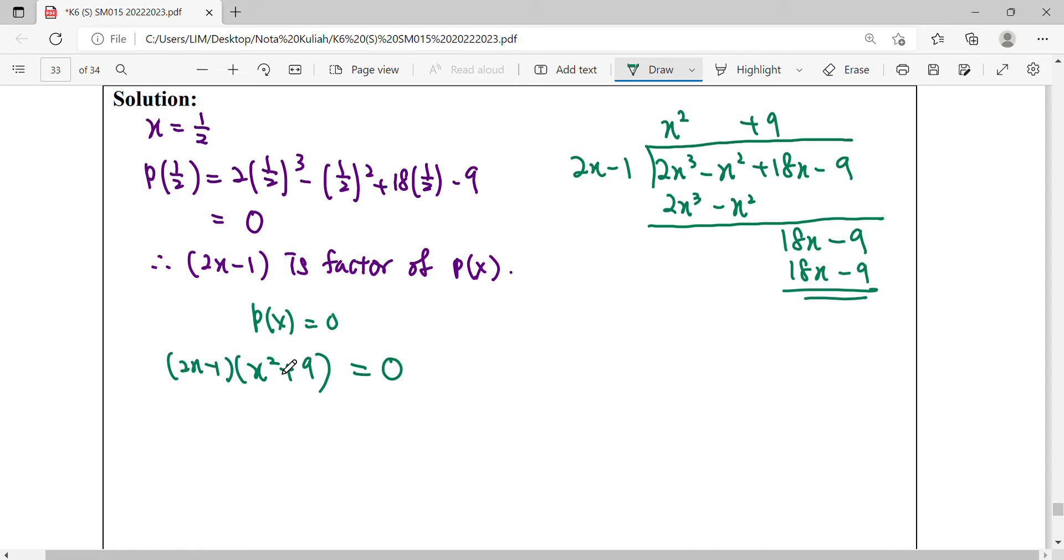You'll notice that in your calculator it gives you a complex number for the roots. This means the quadratic can't be factorized anymore. From here, this will be our finalized factor form.